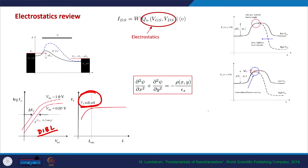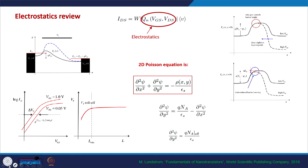In order to account for all these things, we need to understand the 2D electrostatics, and that is why we start with the 2D Poisson equation. The 2D Poisson equation in the MOSFET requires taking the derivative of potential with respect to both X and Y, and we need to know the charge density as a function of X and Y. What we see is that we can write down this 2D Poisson equation just like a 1D Poisson equation.